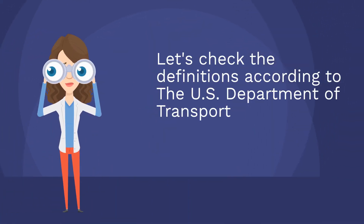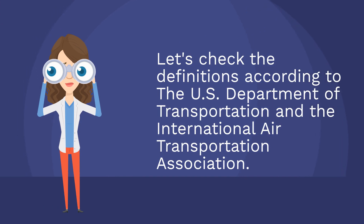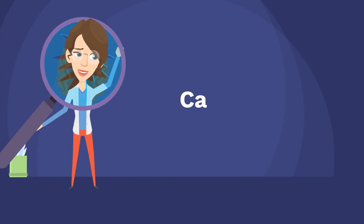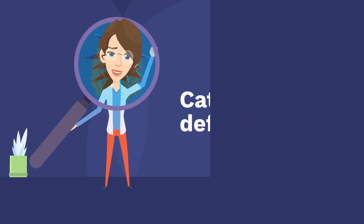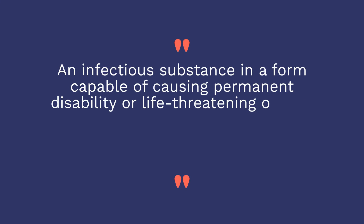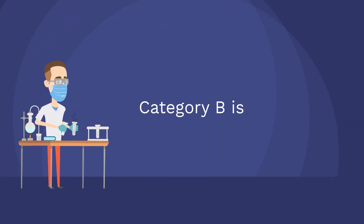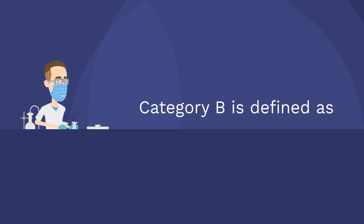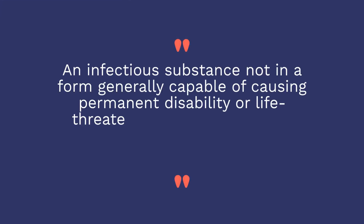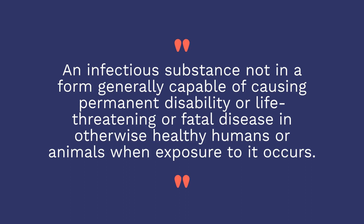Let's check the definitions according to the U.S. Department of Transportation and the International Air Transportation Association. Category A is defined as an infectious substance in a form capable of causing permanent disability or life-threatening or fatal disease in otherwise healthy humans or animals when exposure occurs. Category B is defined as an infectious substance not in a form generally capable of causing permanent disability or life-threatening or fatal disease in otherwise healthy humans or animals when exposure occurs.